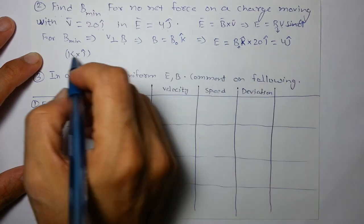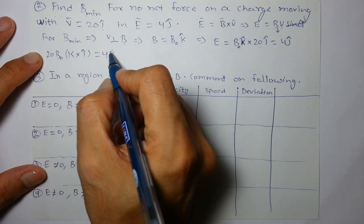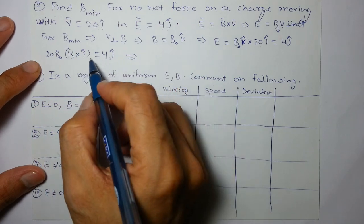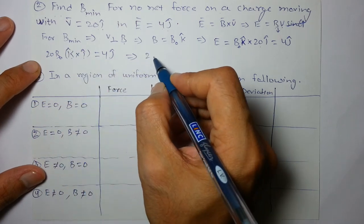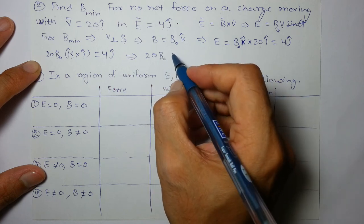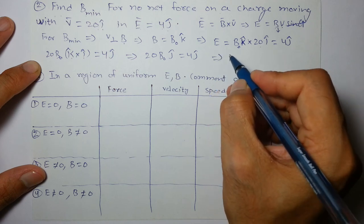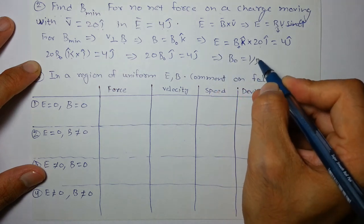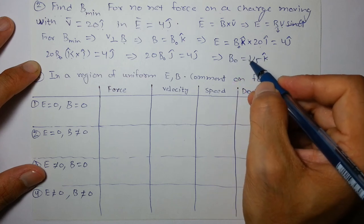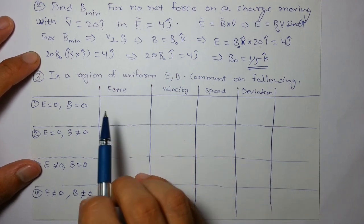K cross I and this is 20 B_naught is equal to 4 J. K cross I is J, so it will be completely right here. 20 B_naught J is equal to 4 J. B value came as 1 by 5 K cap. B_naught positive came, so B value is 1 by 5 K cap. In the next part.